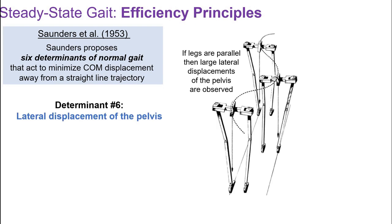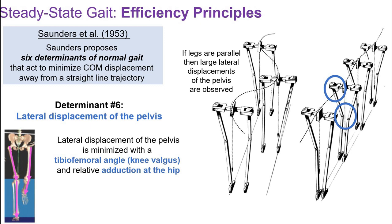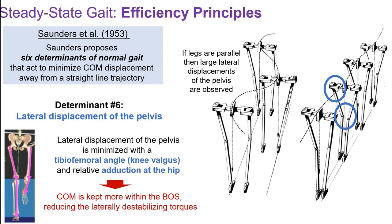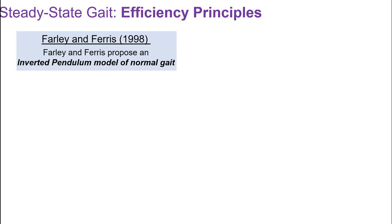The next two determinants are foot and knee mechanisms. The combined action of knee flexion/extension and ankle plantar flexion/dorsiflexion during the stance phase can smooth out the arc of the center of mass. The last determinant is lateral displacement of the pelvis. Large lateral displacements result from walking with feet spread apart, but lateral displacement is minimized with knee valgus and hip adduction. These adjustments reduce side-to-side motion of the center of mass, keeping it more within the base of support and reducing laterally destabilizing torques.